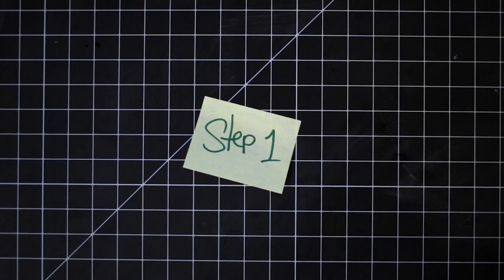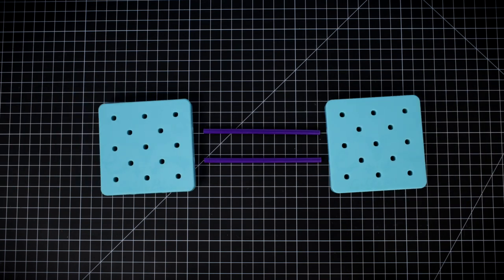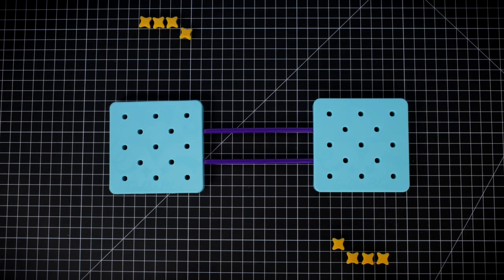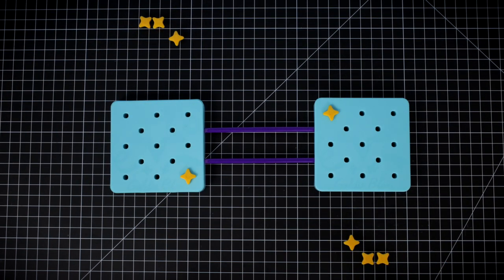Step 1: Connect your two Mini Peg Boards with your two long axles. Now attach Star Stoppers to each corner.